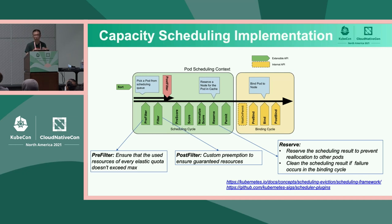There are three plugins. The pre-filter checks the quota and makes sure when a pod is scheduled it cannot exceed the maximum quota. The post-filter is basically preemption — if a namespace is underusing its guaranteed quota, then preemption must be performed. The reserve stage is when you schedule a pod: the scheduler has to reserve some resources to avoid race conditions.